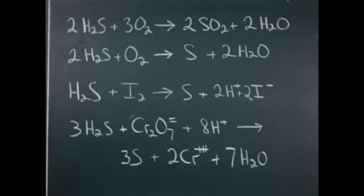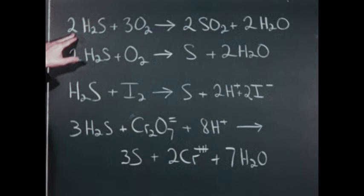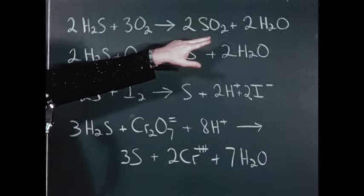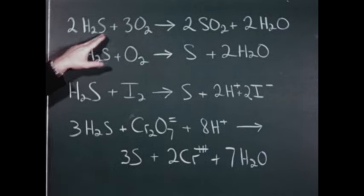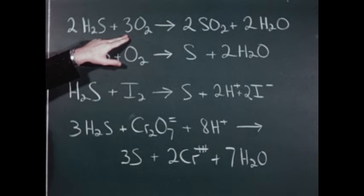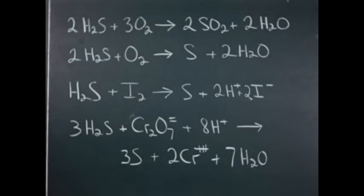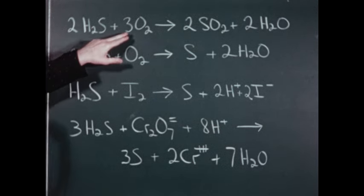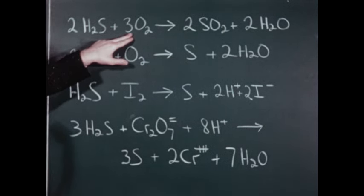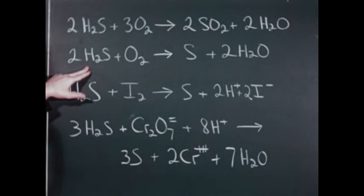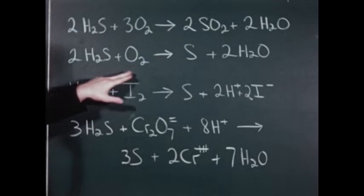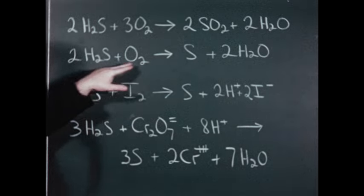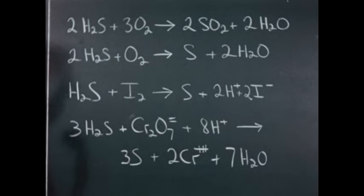When we ignited the mixture of hydrogen sulfide and oxygen, some of the hydrogen sulfide burned according to an equation yielding sulfur dioxide and water. This equation requires two volumes of hydrogen sulfide and three volumes of oxygen — about one and a half times as much oxygen as hydrogen sulfide. In our reaction we used equal volumes of hydrogen sulfide and oxygen, so not quite enough oxygen was present for this reaction. So some of the hydrogen sulfide burned according to the equation for hydrogen sulfide burning in a deficiency of oxygen, which yields sulfur and water. This equation accounts for some of the sulfur which we saw deposited on the sides of the bottle.